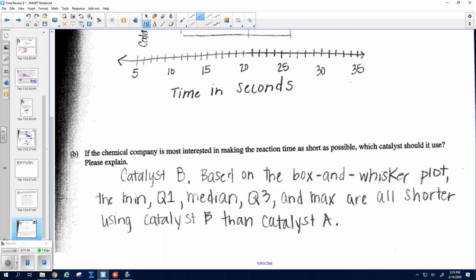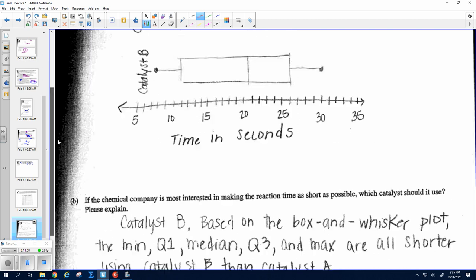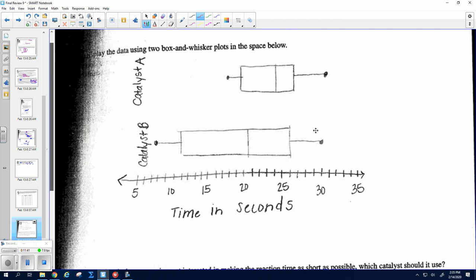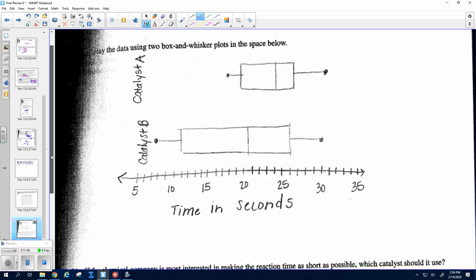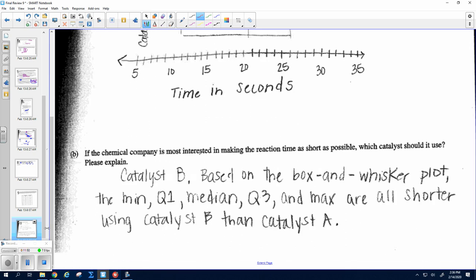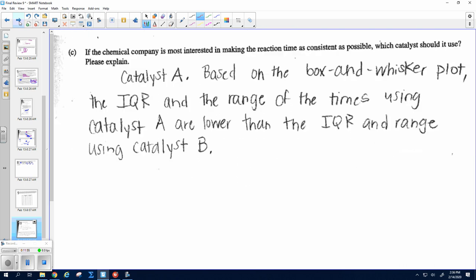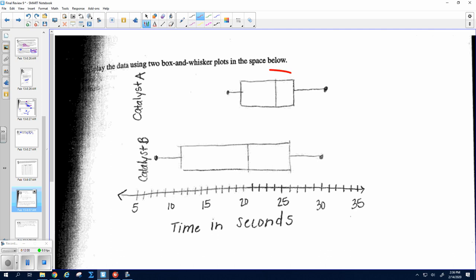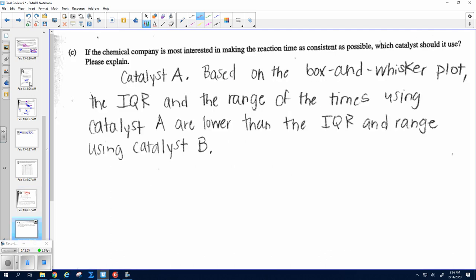Alright, so Part A, which one should it use if you want the shortest reaction time? So notice that this min is slightly less, Q3 is slightly less, the median is less, Q2 is less, and the min is less, all on Catalyst B. So you want to use Catalyst B, because all are shorter than Catalyst A in those relative positions. And then for this one, if we want to just be as consistent as possible, we're looking for less spread. There's a shorter range. There's a smaller IQR. And so that would be Catalyst B.